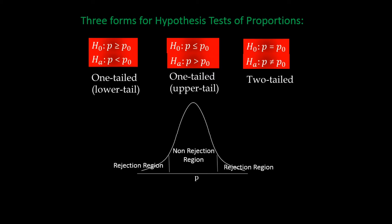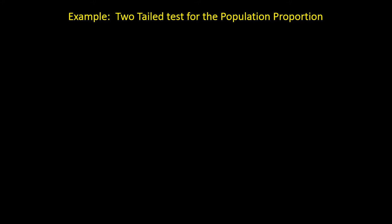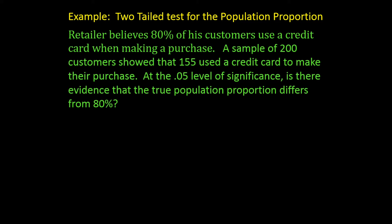Let's start with a two-tailed example testing for the population proportion. Suppose a retailer believes that 80% of his customers use a credit card when making a purchase. A sample of 200 customers showed that 155 used a credit card. At the .05 level of significance, is there evidence that the true population proportion differs from 80%? Since the question asks if the proportion differs — not a specific direction — our hypotheses use equal-to and not-equal-to. The null is p equals .8 and the alternative is p not equal to .8.